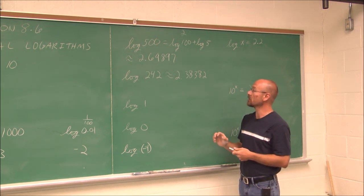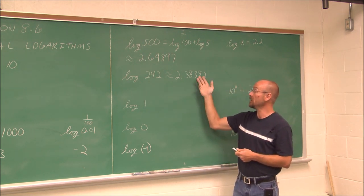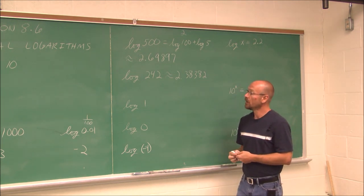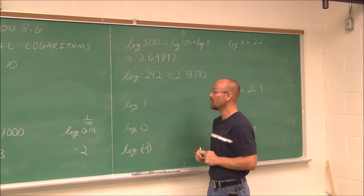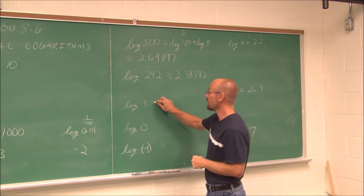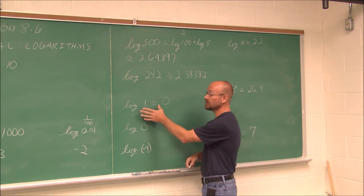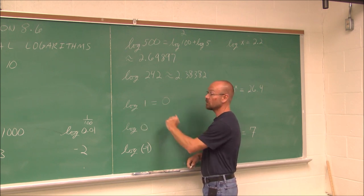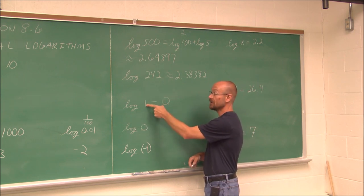What about log of 1? Hopefully you don't even need a calculator, but put it in. Your calculator should tell you this value is 0. Regardless of the base, this is one of our rules of logarithms: the log of 1, regardless of what the base is, is always 0, because any base to the 0 power is 1.